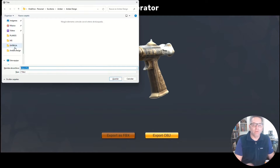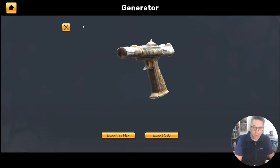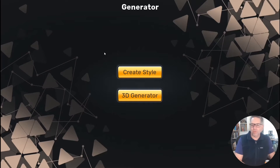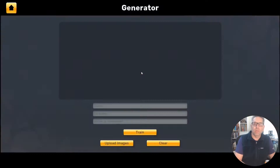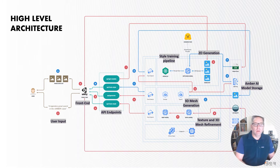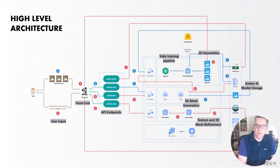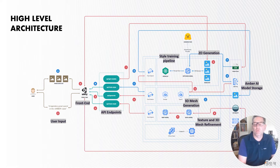We generated a 3D model. How does this magic work? We have a lot going on under the hood. We created a Unity front end and then use a Google Cloud backend connecting to lots of different parts of the pipeline — an API for getting models done, training the style, generating either 2D and/or 3D, and then doing mesh generation.